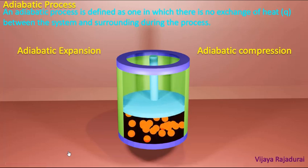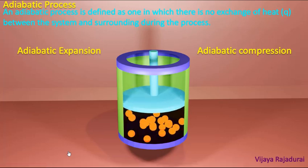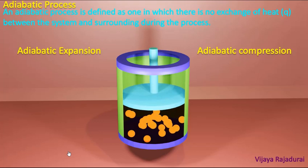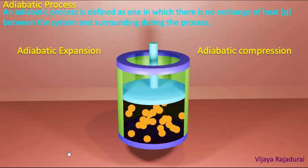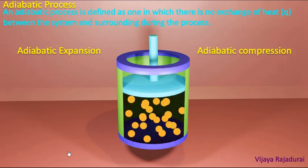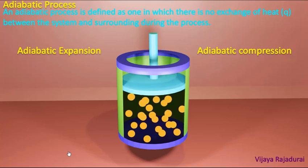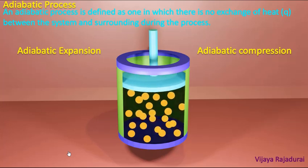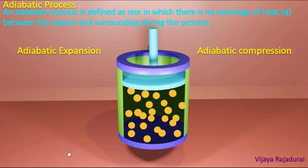During adiabatic expansion, when the piston moves in the upward direction, the volume of the gas molecules increases from lower volume to higher volume, pressure decreases, and temperature also decreases. The decrease of temperature is indicated by a color change from red to white.